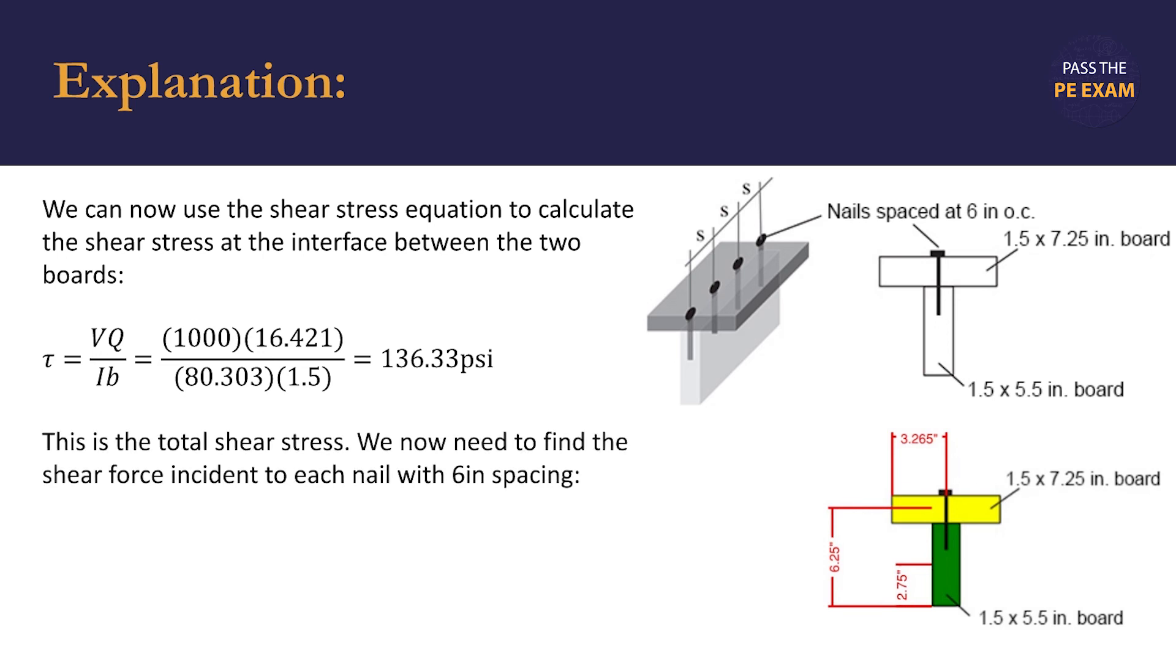We need to find the shear force incident to each nail with the 6 inch spacing. v sub nail is the shear force incident to each nail, and tau is the shear stress that we calculated above to be 136.33 psi. Note that this stress is in psi, or pounds per square inch, which is pounds over an area.